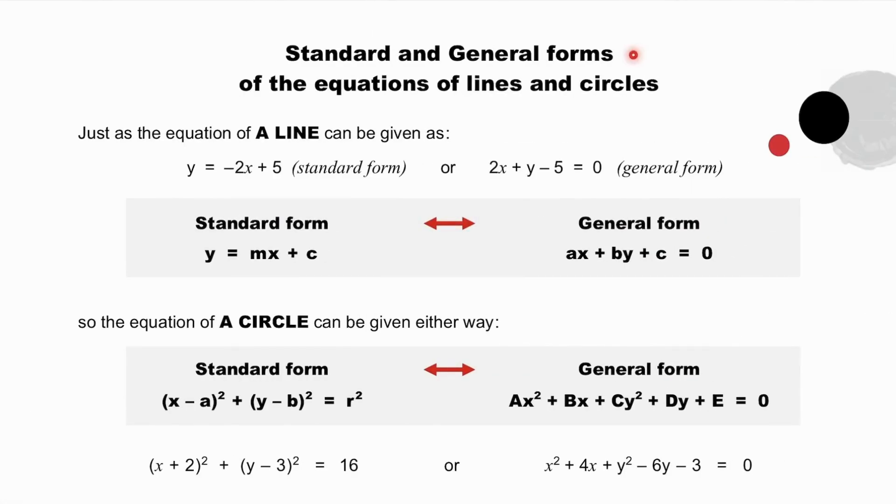Standard and general forms of the equations of lines and circles. Just as the equation of a line can be given as y = -2x + 5 in standard form, or 2x + y - 5 = 0 in general form, we are familiar with the standard and general forms of the equations of a line.